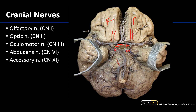You can see the abducens nerves right here on the inferior surface of the pons. You can also see the accessory nerve or cranial nerve 11 ascending from the spinal cord and its close relationship to the posterior inferior cerebellar artery or PICA. So that nerve that's ascending from the spinal cord is your accessory nerve.